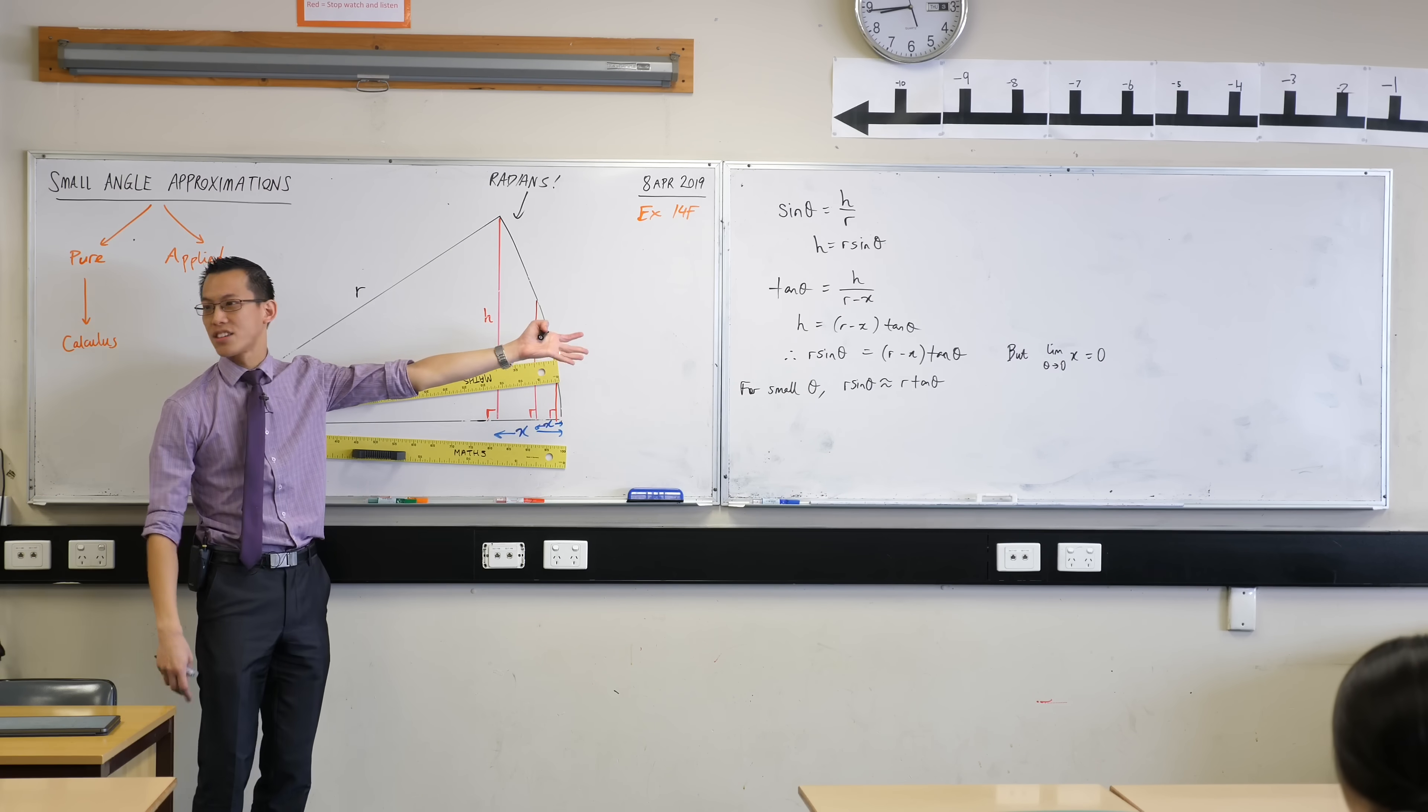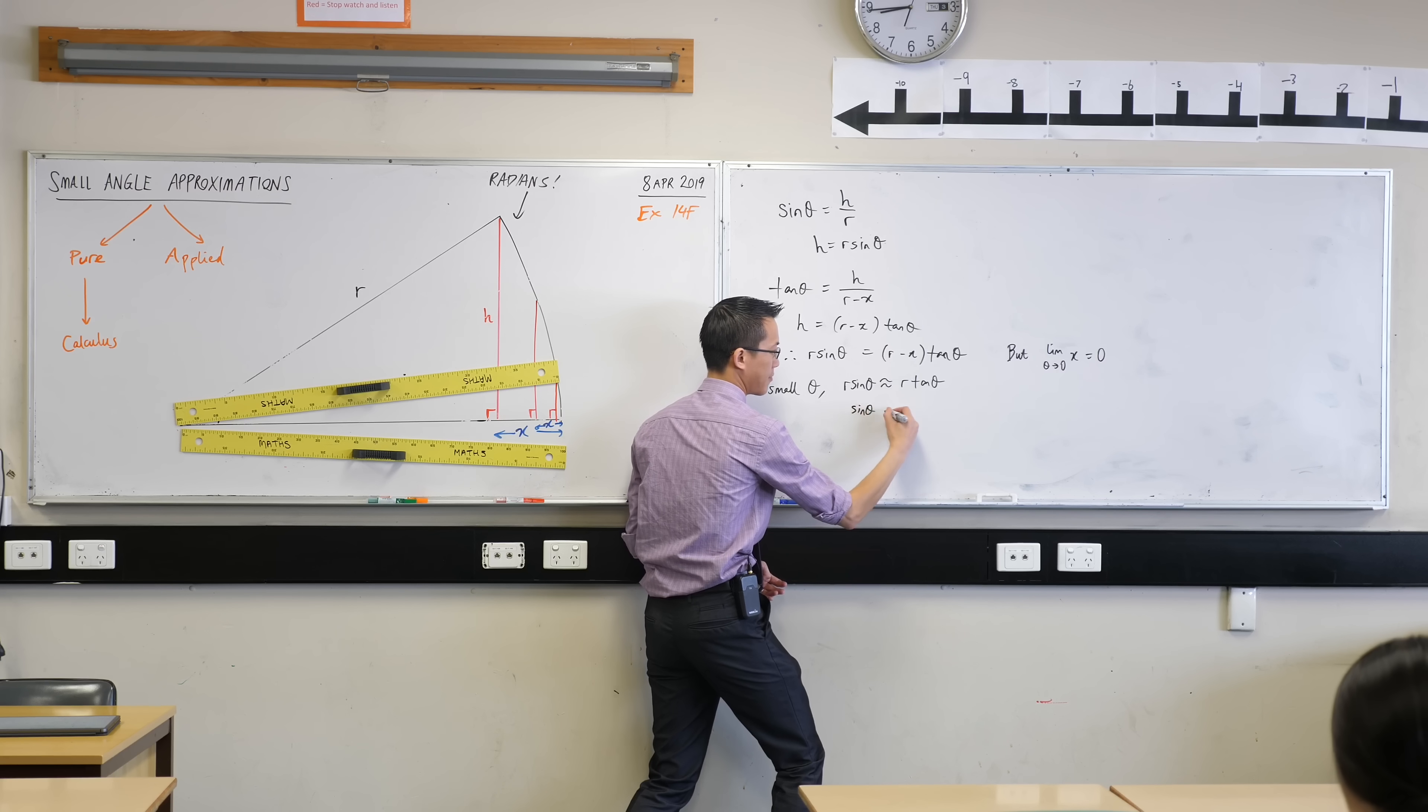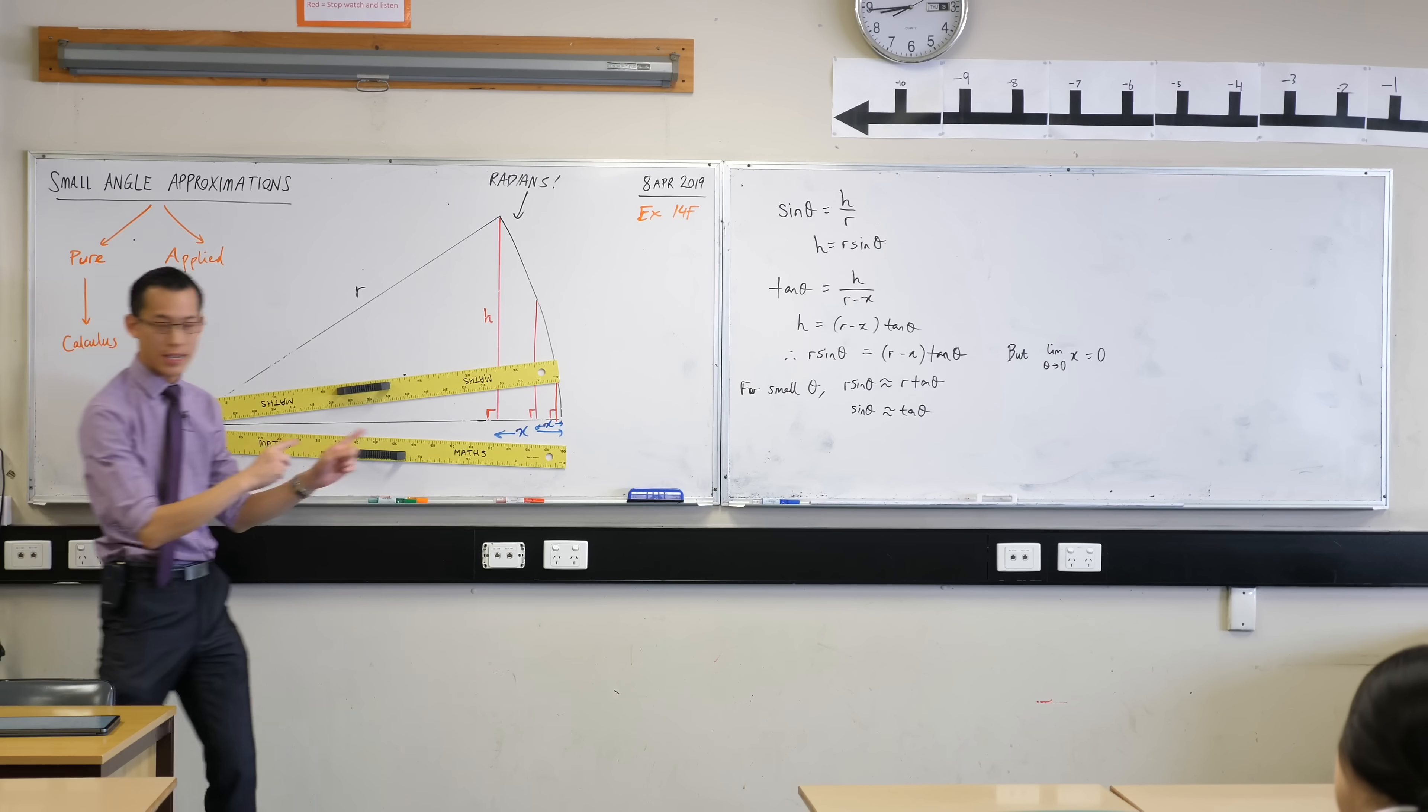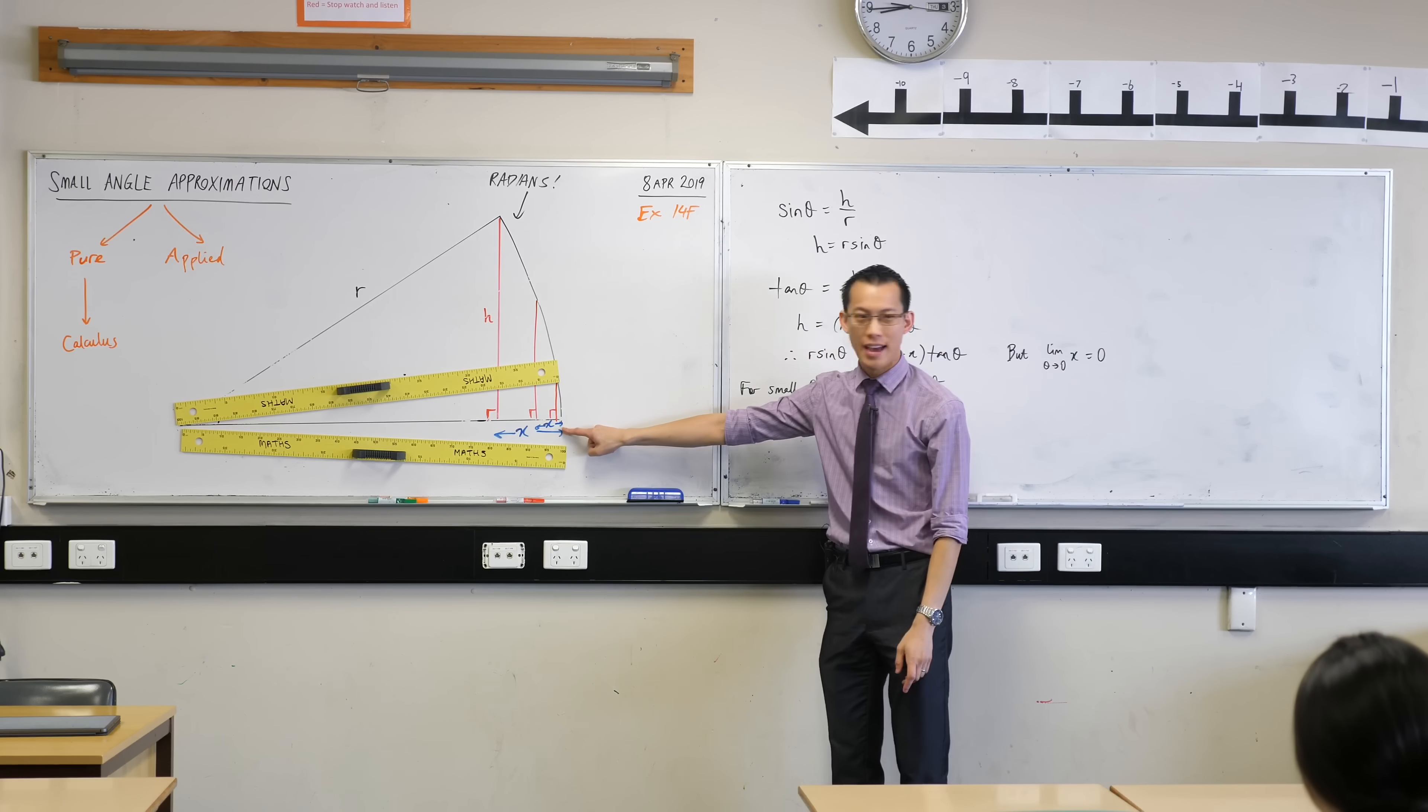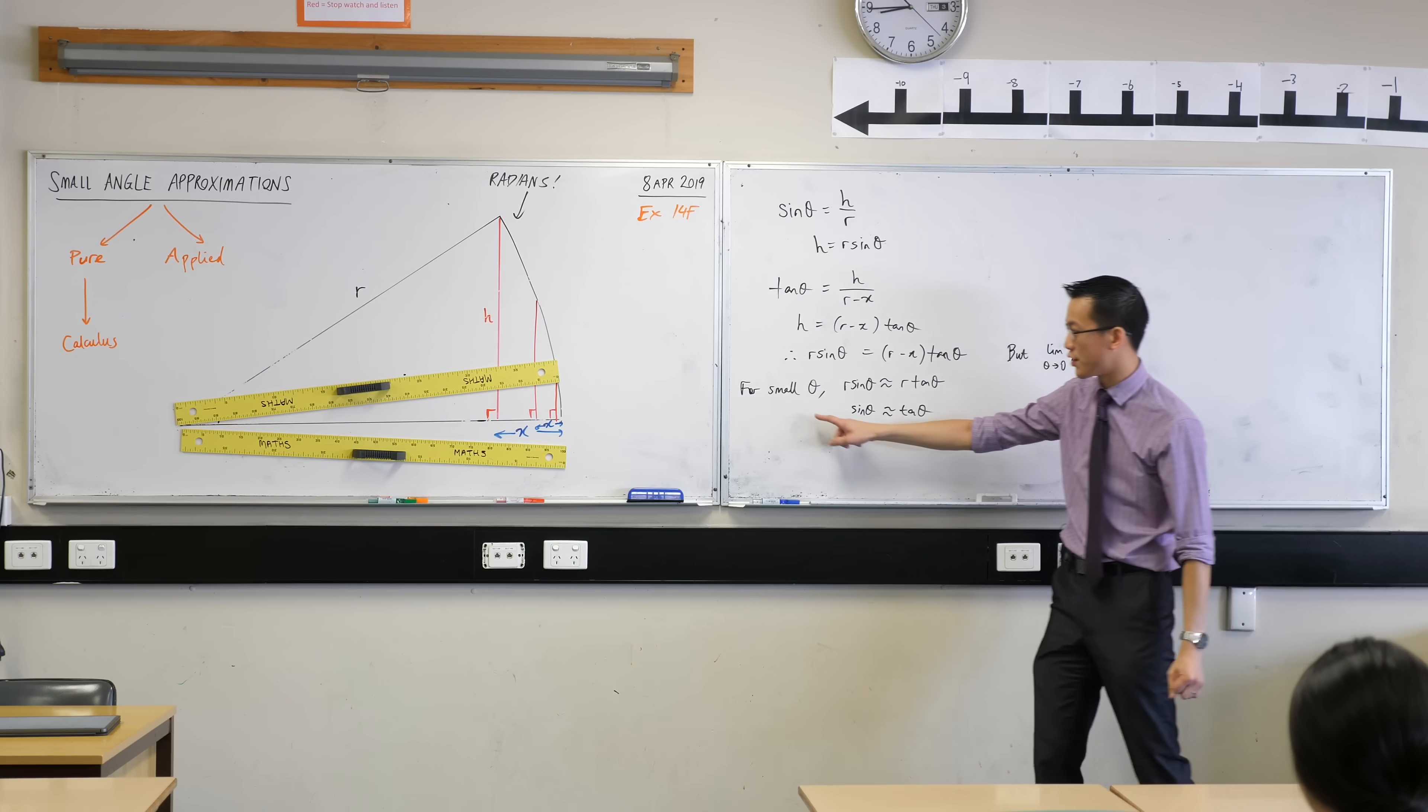Now, you can see here R is just a length of any description, so I can divide both sides through by R, so I'm getting this, like so. Now, sine theta and tan theta, what are we saying? As theta gets smaller and smaller and smaller, the difference between them is really this X and that's getting smaller and smaller and smaller and smaller. You can see that these things are approaching each other for small values of theta.